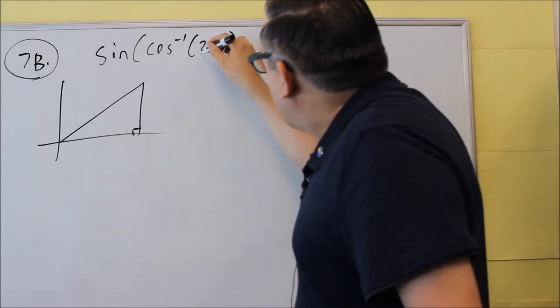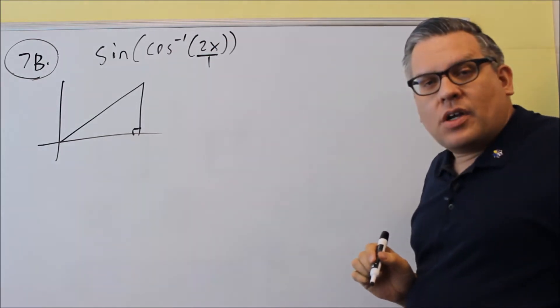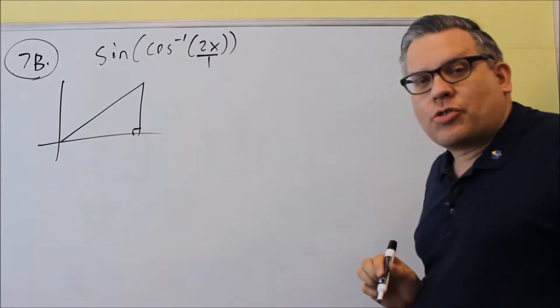Now this, since there's only one thing inside here, we'll make this 2x over 1, so that way we have two sides we can label on our triangle.